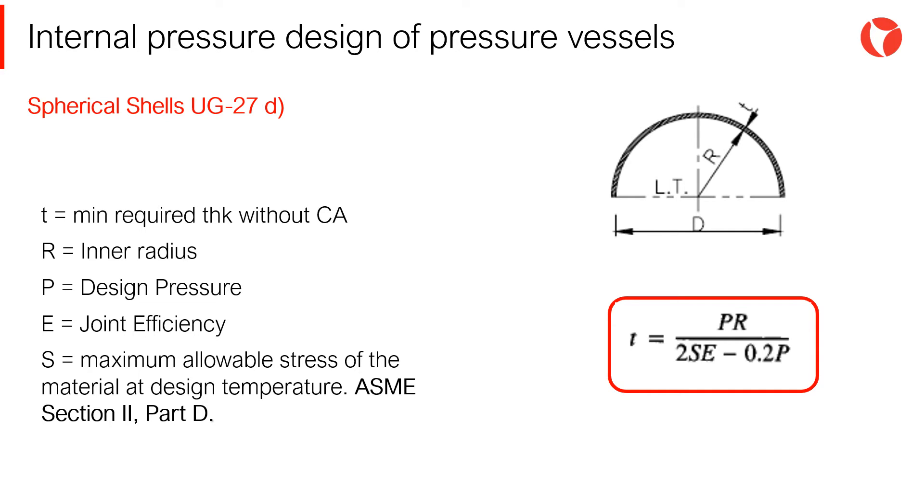The nominal or commercial thickness of the shell, for both cylindrical and spherical shells, will then be comprised of the following: minimum required thickness due to internal pressure, the corrosion allowance if required, the mill under tolerance allowance, and any other tolerance over thickness required.